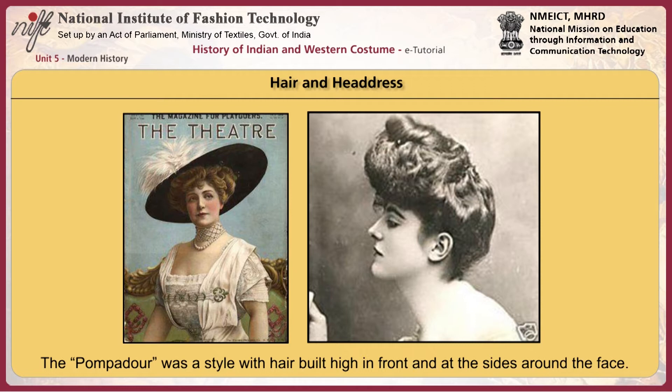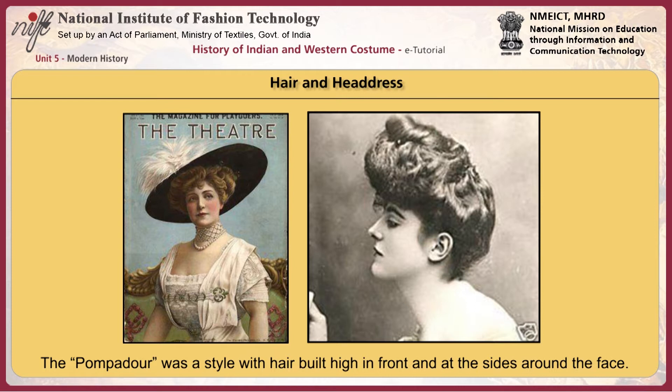The pompadour was a style with hair built high in front and at the sides around the face. Hat styles were large, wide-brimmed picture hats and sometimes included brimless stalks. Decorations were lavish with artificial flowers, lace, buckles, feathers, and bird wings. Hair ornaments worn for evenings included feathers, jewelled combs, and small skull caps of pearl called Juliet caps.